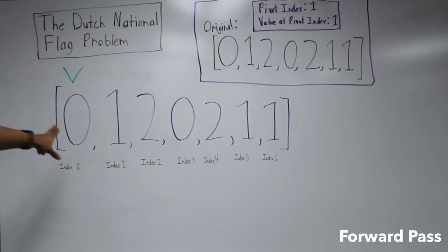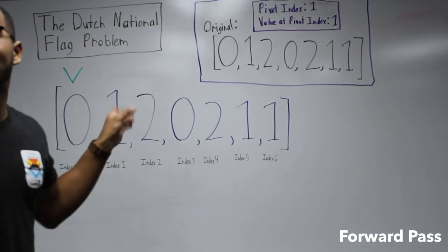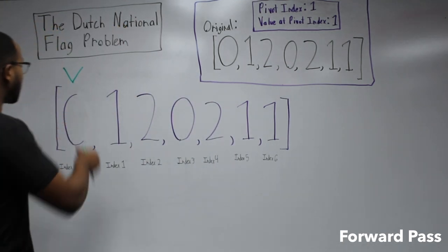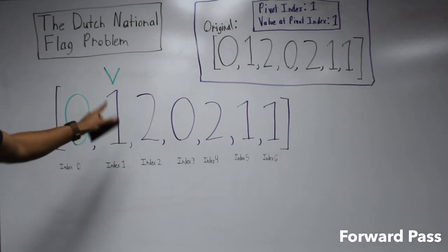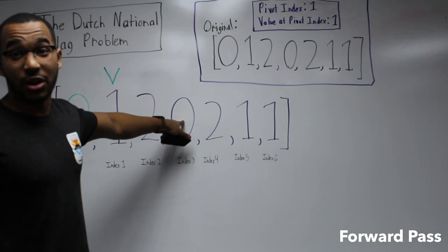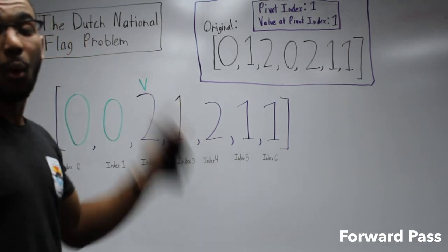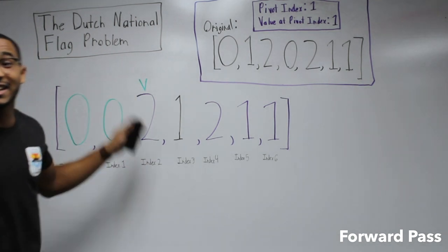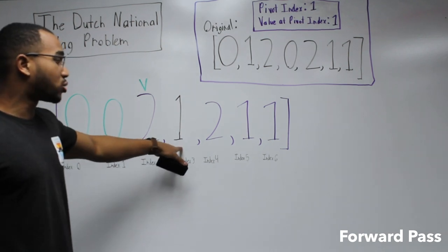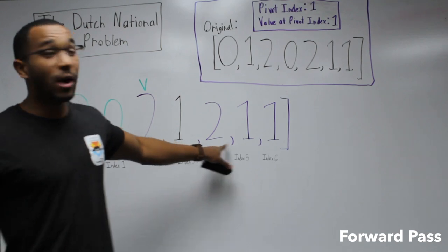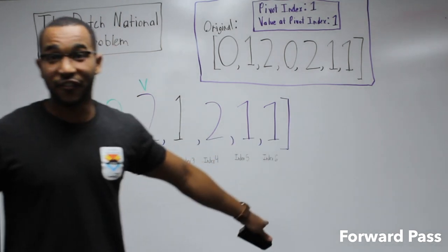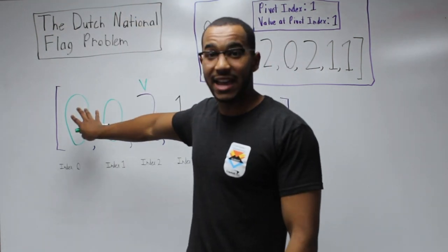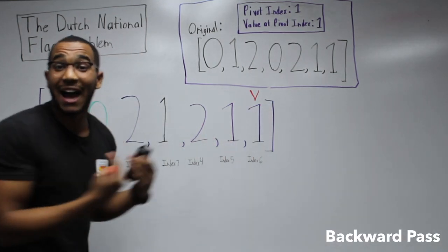Starting at index zero: is zero less than one? Yes — place it and advance the placement index. Is one less than one? No. Is two less than one? No. Is zero less than one? Yes — swap index one and index three, place it, advance placement to index two. Continue: is two less than one? No. Is one less than one? No. Is one less than one? No. Forward pass complete — all items less than the pivot are at the beginning of the array.